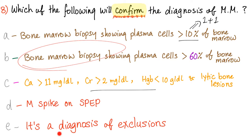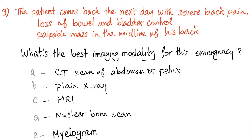Multiple myeloma is not a diagnosis of exclusion — not when you have all of these tests available. The patient comes back the next day with severe back pain, loss of bowel and bladder control, and a palpable mass in the middle of his back.